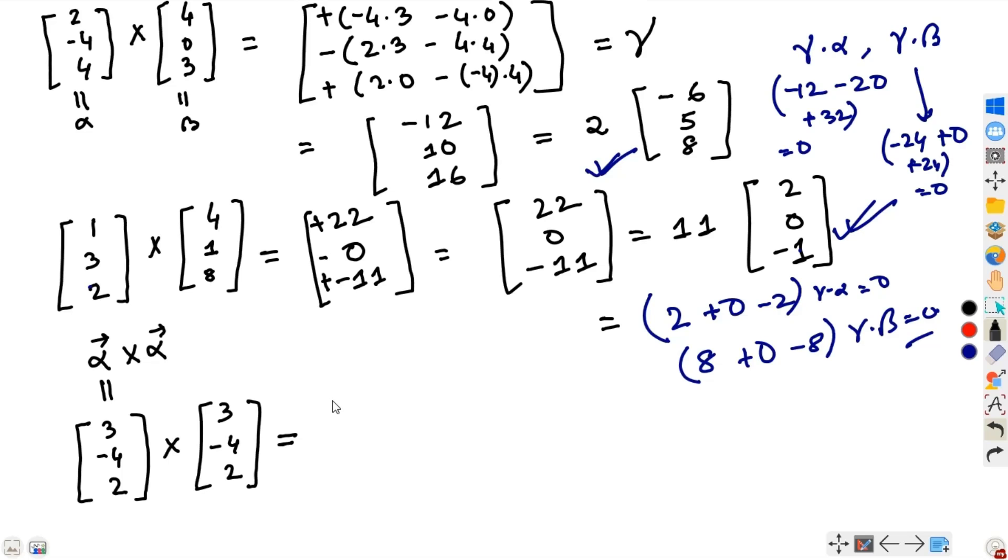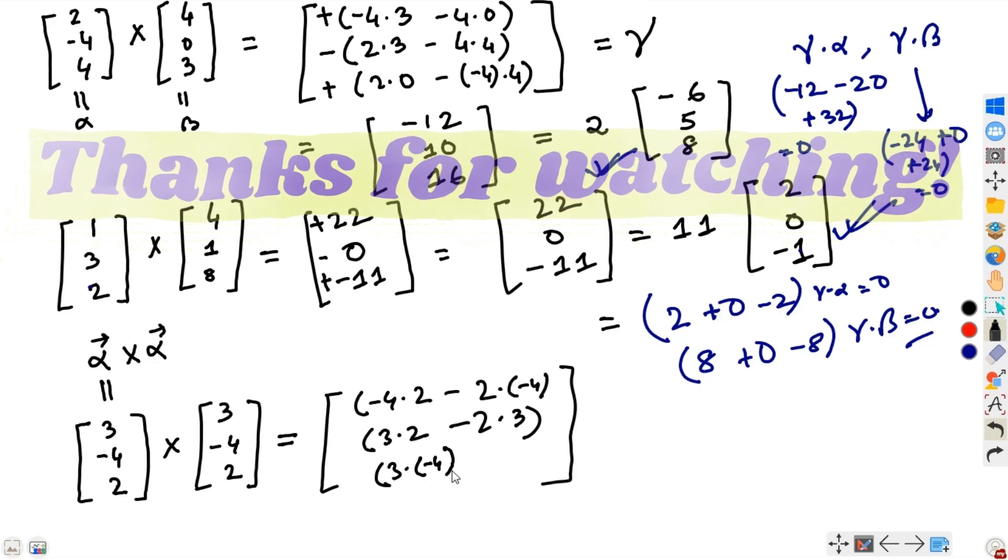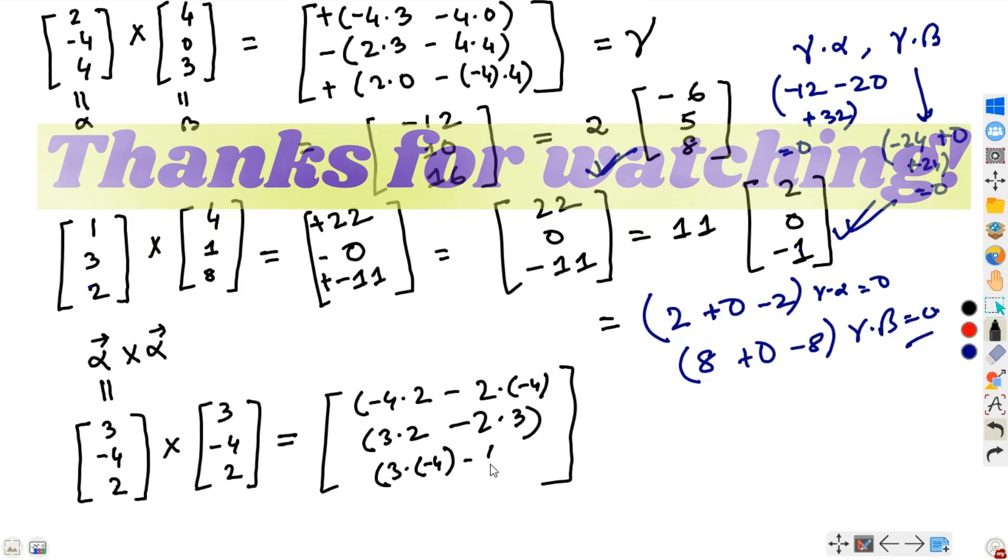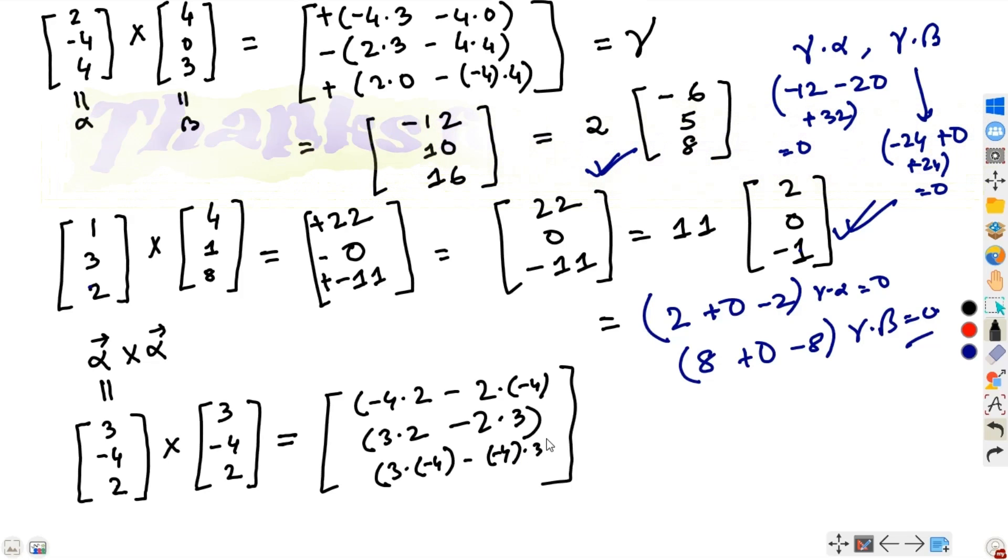For the first component, we have minus 4 times 2 minus 2 times minus 4. For the second component, we have 3 times 2 falling diagonal, then rising diagonal, minus 2 times 3. For the third component, we have 3 times minus 4, and minus 4 times 3. Plus, minus, plus, following sign convention.